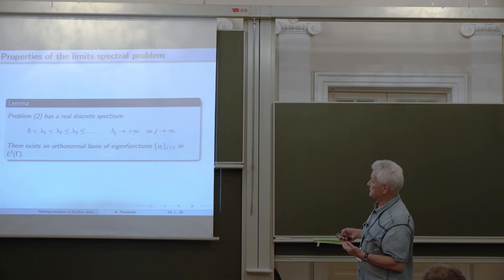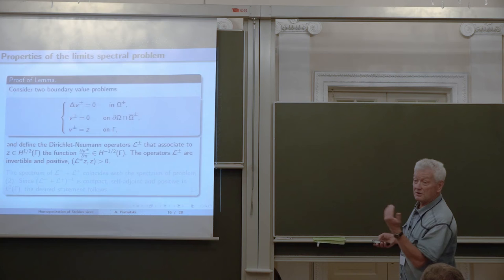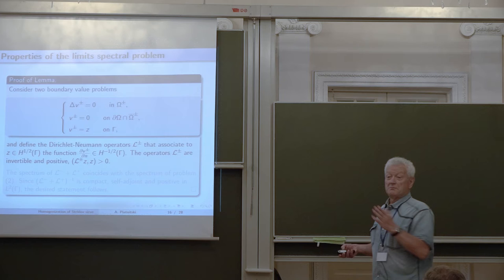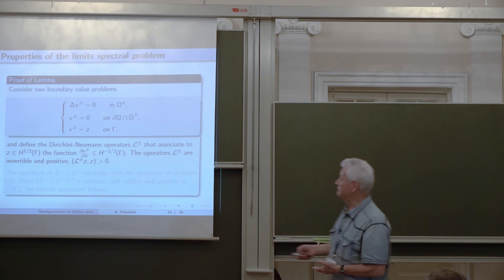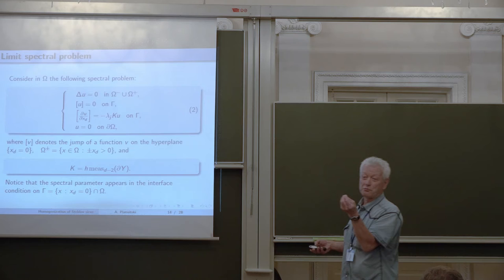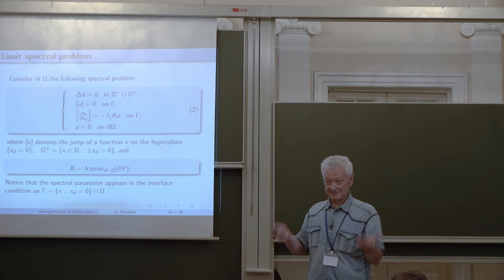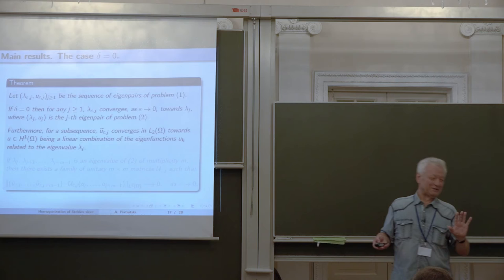The proof of well-posedness is very easy. We consider two Dirichlet problems in the upper and lower parts, and for each we consider the Dirichlet-to-Neumann operator on the surface. Note the normal derivative goes down in one case and up in the other. The sum of these two operators is exactly our operator. The sum of two positive operators with the same domain is self-adjoint and positive definite.